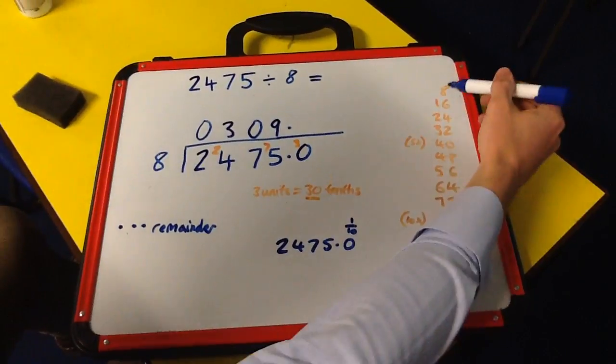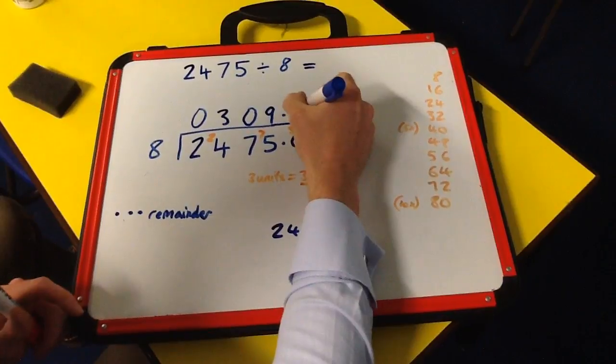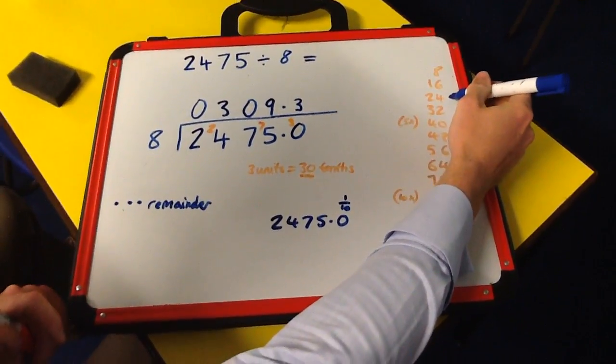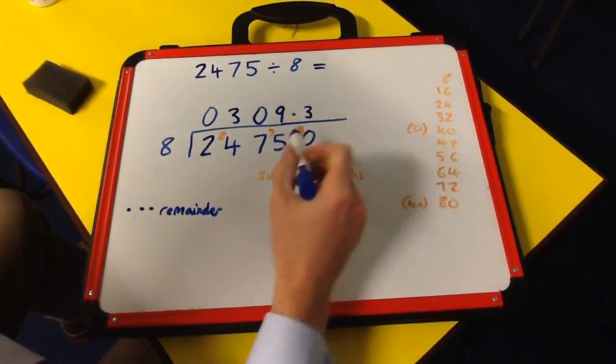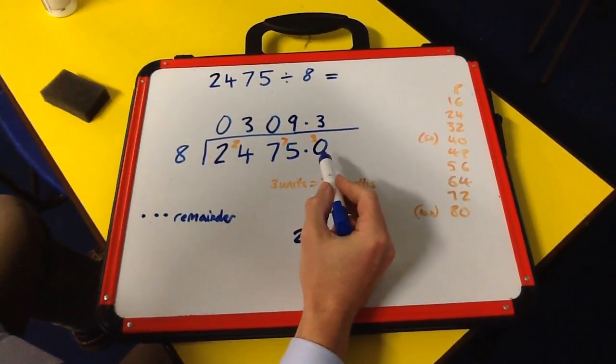8 into 30 goes 3 times. 3 eights are 24, and my remainder is 6, because from 24 to 30 you've got 6 left over.